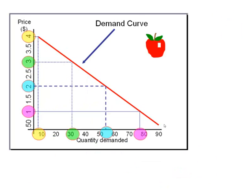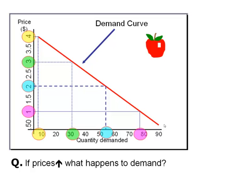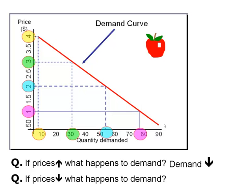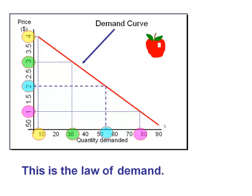Now keep in mind what we just saw. If prices increase, what happens to demand? Demand goes down. The goods or services became more expensive — the grannies can't afford to buy as many apples and they choose not to. Now if prices drop, what happens to demand? Demand will go up. Grannies can afford to buy more apples, to make more pie, and they may choose to buy more apples instead of other more expensive fruit. This is called the law of demand.